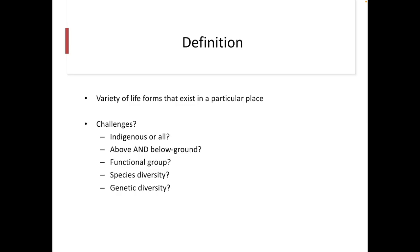Do we include the above ground and the below ground? Do we include functional groups, for example all of the carnivores, herbivores, or detritivores? Is it species diversity we're really looking for, or genetic diversity within a species? And it's difficult when we say we need greater biodiversity, knowing that greater biodiversity also causes challenges for certain areas and things.